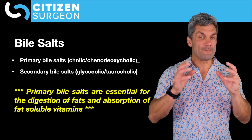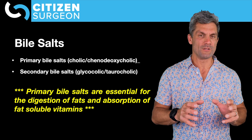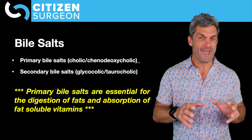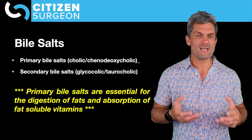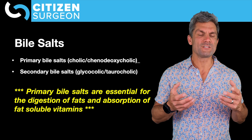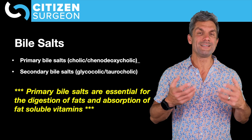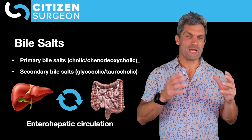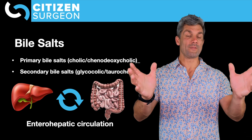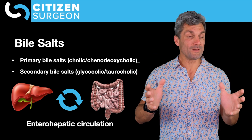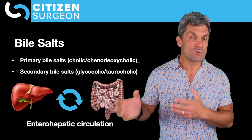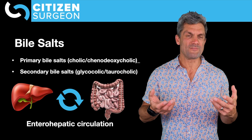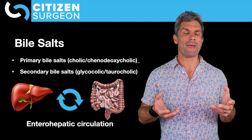Primary bile acids are essential for dissolving, digesting, and absorbing fat. They're also important for digestion and absorption of fat-soluble vitamins: A, D, E, and K. We can make primary and secondary bile acids to digest fats, and through the terminal ileum we can reabsorb bile acids — that's called the enterohepatic circulation.